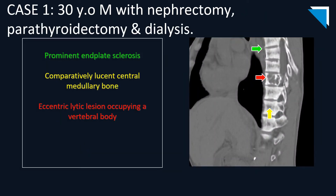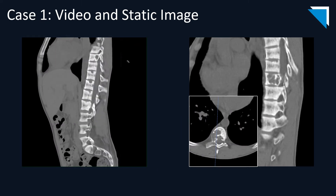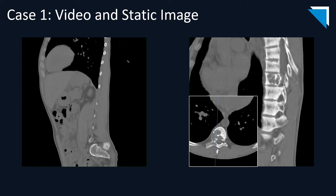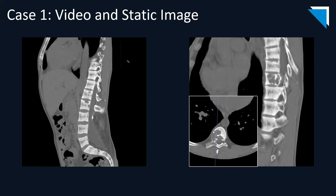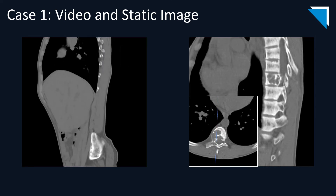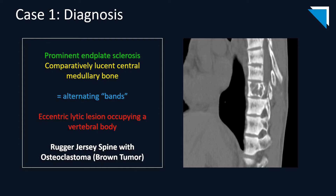Here is a 30-year-old male on dialysis with a previous history of nephrectomy and parathyroidectomy. We see band-like end plate sclerosis making the central medullary bone comparatively lucent. Upon this background, you can also appreciate a bubbly expansile lucent lesion within a thoracic vertebral body. On cine imaging, it is easier to appreciate the band-like areas of end plate sclerosis throughout the spine, as well as more lucent lesions within the pelvis in addition to the thoracic vertebral body lesion.